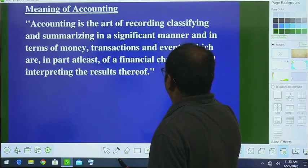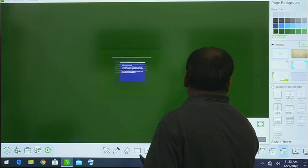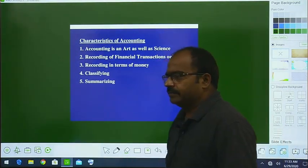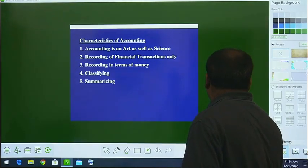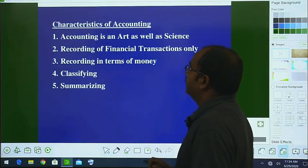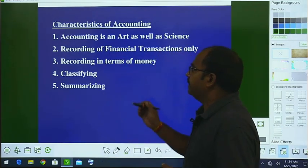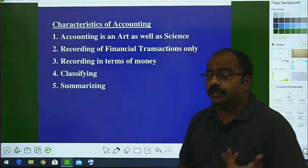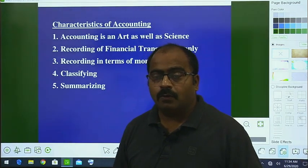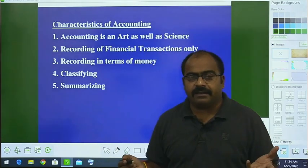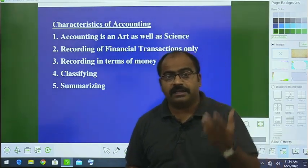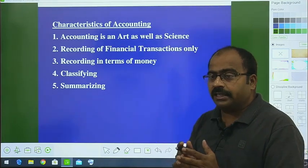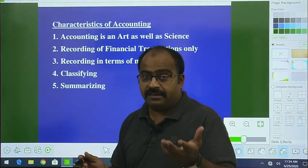Now let us move to the next topic: characteristics of accounting. Accounting is an art as well as science. Why is it an art? Why is it a science? Art is a creative thing — it is creativity. Creativity means recording things in a proper way, day-wise transactions. That is the art.